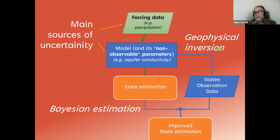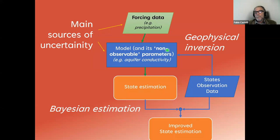In geophysical inversion instead, the focus is mainly on the original uncertainty, especially in the model parameters. So even if the final goal is to improve state estimation, the specific goal of data assimilation in geophysical inversion is to improve and correct uncertainty in the model parameters, arriving at improved state estimation as a sort of by-product improvement.